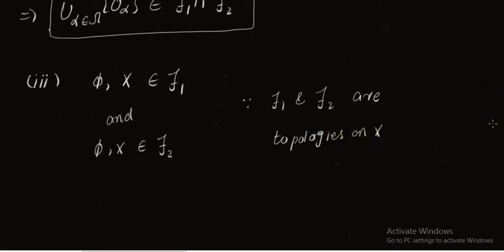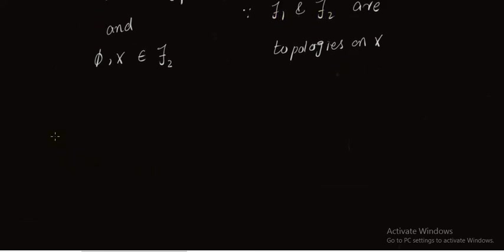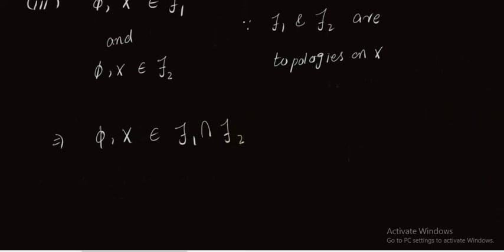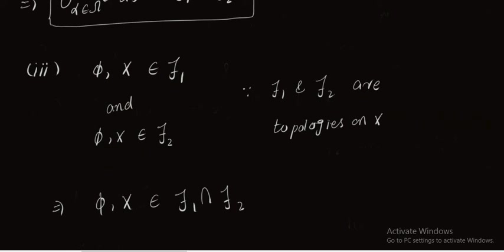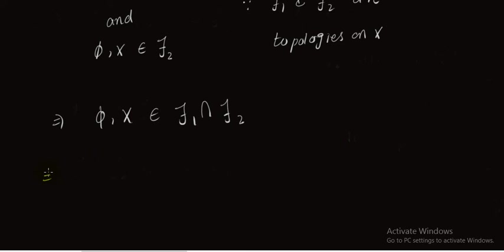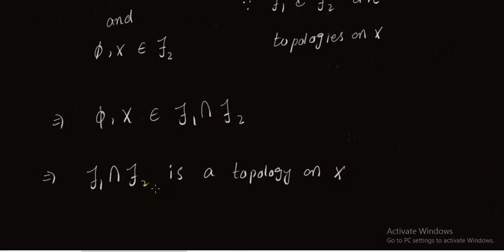Since φ and X belong to τ1 and φ and X belong to τ2 — the reason being that τ1 and τ2 are topologies on X — from here we can write that φ and X belong to τ1 ∩ τ2. So all three conditions of topology are satisfied, which implies τ1 ∩ τ2 is a topology on X.